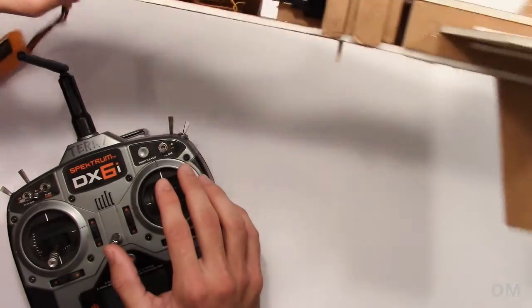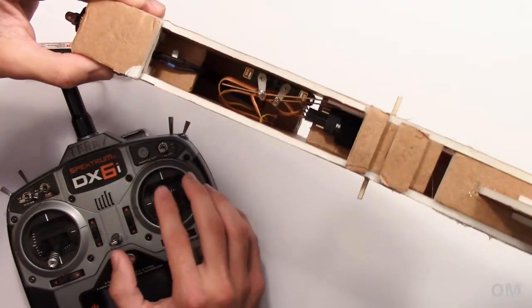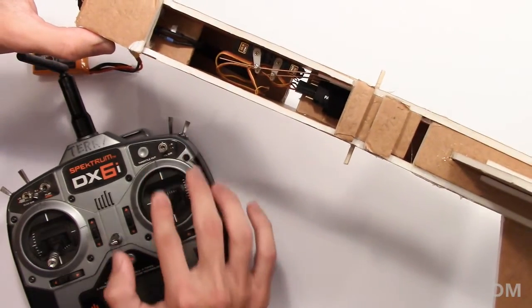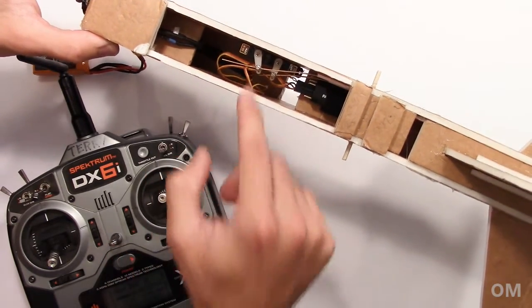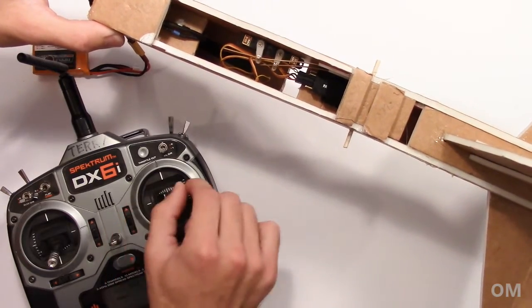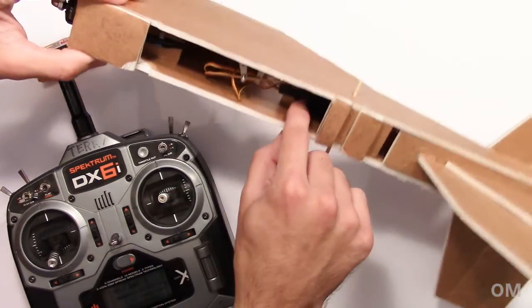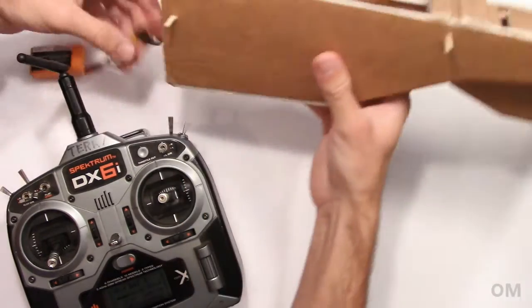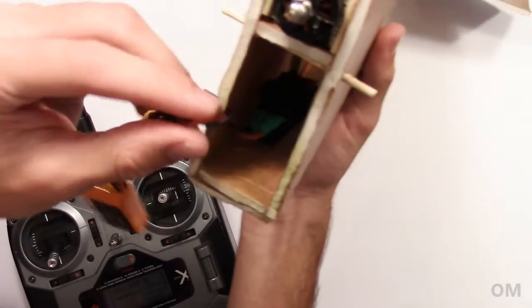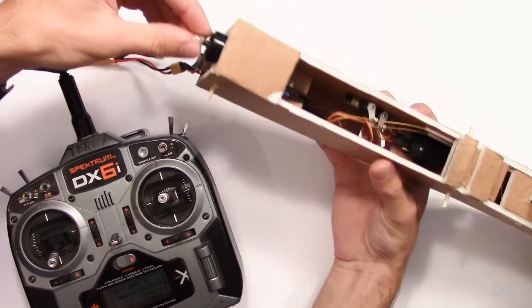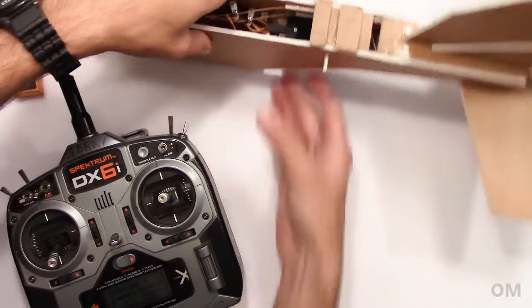And from the inside view here, you can see that's right there is my elevator servo moving the elevator. And right there is my rudder servo, and that's moving the rudder. Okay. And then right here we have our receiver. And kind of tucked down in here, we have our ESC or electronic speed control. And then of course our motor here at the front. And that's it.